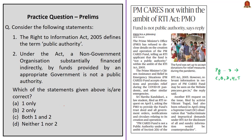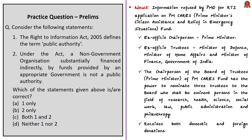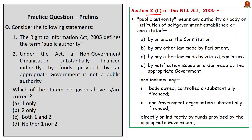This question is framed with reference to a news article about an RTI application on the PM CARES Fund — the Prime Minister's Citizen Assistance and Relief in Emergency Situations Fund. The RTI application asked to provide the trust deed of the fund and all government orders, notifications, and circulars relating to its creation and operation. The Prime Minister is the ex-officio chairperson, and the Union Ministers of Defense, Home Affairs, and Finance are ex-officio trustees. The PMO refused to give the requested information, saying the fund is not a public authority under Section 2(h) of the RTI Act of 2005.